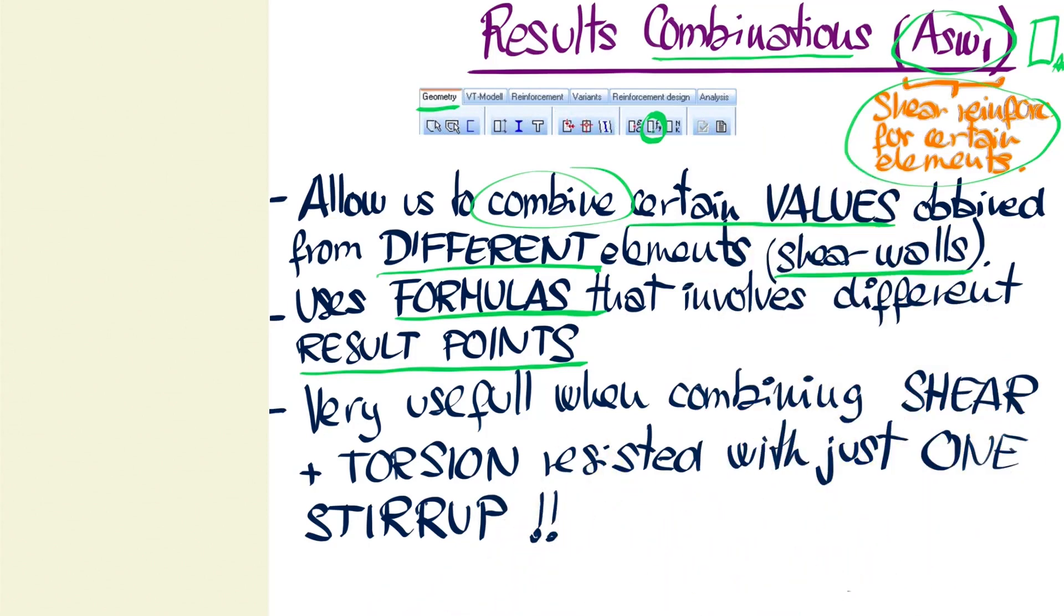Additionally, we know that to resist shear and torsion, we'll have to introduce several shear walls. And for each shear wall, as we've already discussed, we'll obtain some certain results that will ultimately end up in the availability of just one stirrup in the reinforcement.